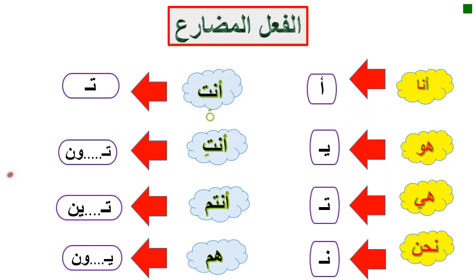As-salamu alaykum. Today's lesson is about the present tense, الفعل المضارع, and how we can use it with subject pronouns — such as أنا (I), هو (he), وهي (she).